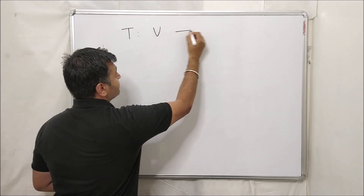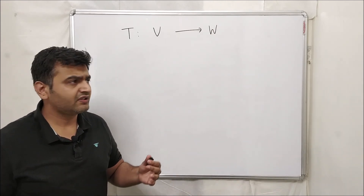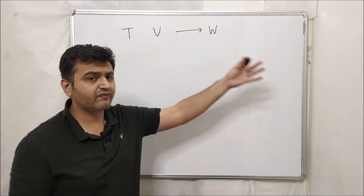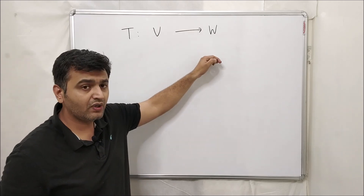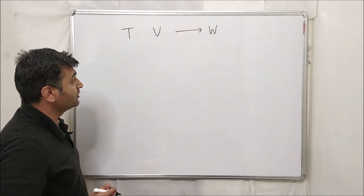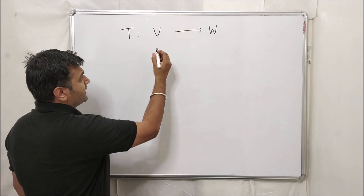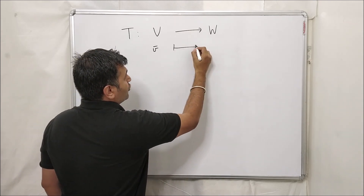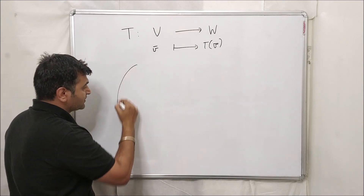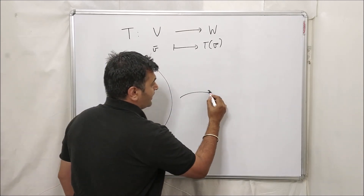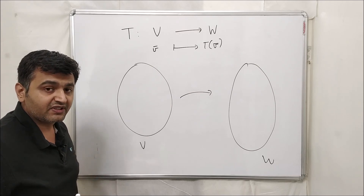Suppose you have a function T from one vector space to another vector space. V and W are vector spaces over the real numbers. This function takes a vector from V and the output is T(v̄), which is in your vector space W. Now I will say that T is a linear transformation provided it satisfies two properties.